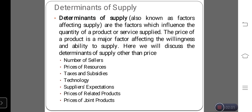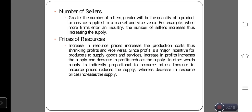The first one is number of sellers. The second one is price of resources. The third one is tax and subsidies. The fourth one is technology. The fifth one is supplier's expectation. The sixth one is price of related products. The last one is price of joint products.